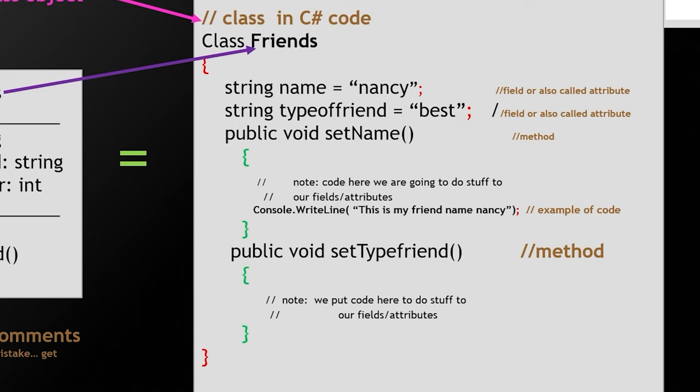String name, I'm actually applying in this example, Nancy. And string type of friend, I'm applying best. There we have our method, set name.